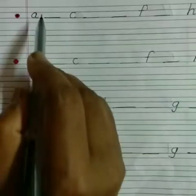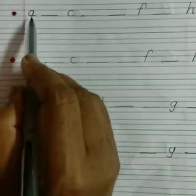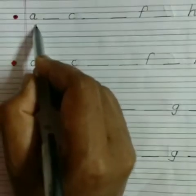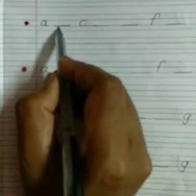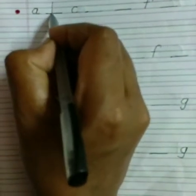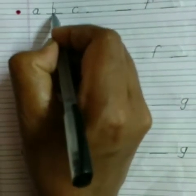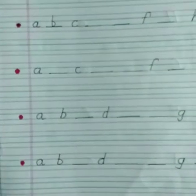So first there is small letter A. After A, what comes? Since small letter A is there, then small letter B should come here.